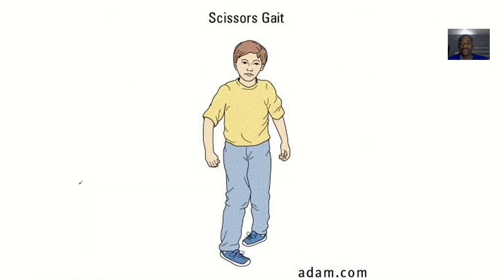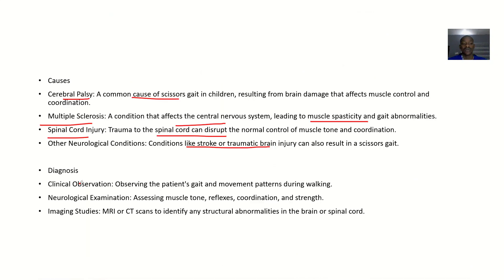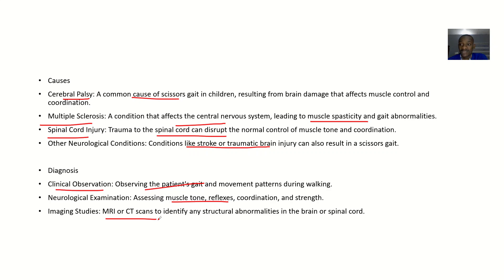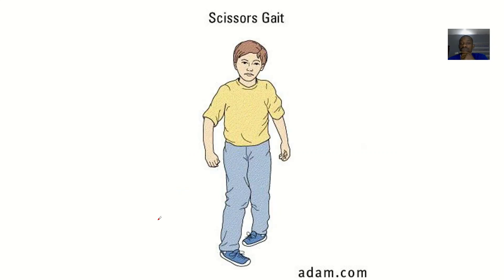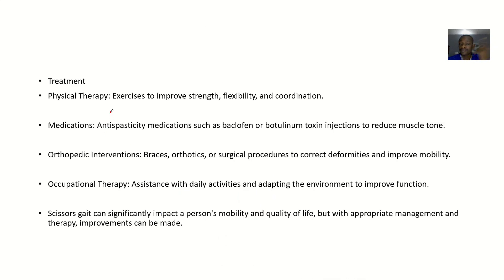For diagnosis of scissors gait, once you see it you know. Clinical observation involves observing the patient's gait and movement patterns while walking. Neurological examination assesses muscle tone, reflexes, coordination, and strength. Imaging studies such as MRI or CT scan can identify structural abnormalities in the brain or spinal cord.